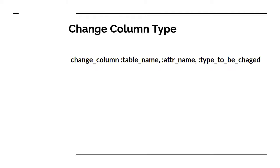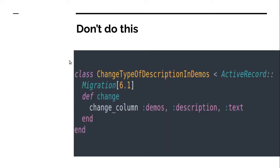To change a column we need to use the `change_column` method, just like `add_column`, `remove_column`, and `rename_column`. The syntax accepts three arguments: first is the table name in which you want to change the attribute, second is the attribute name you want to change, and third is the type you want to change the attribute to.